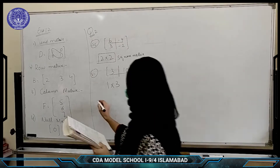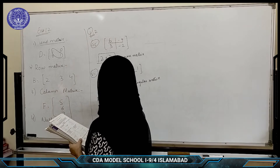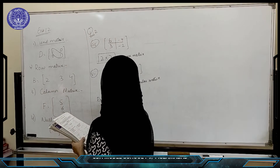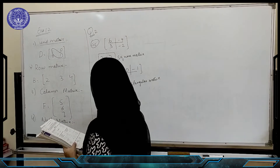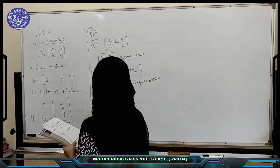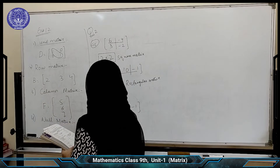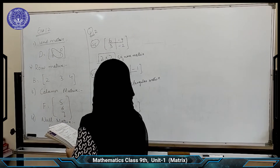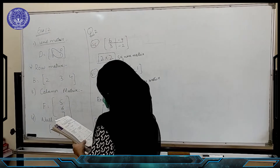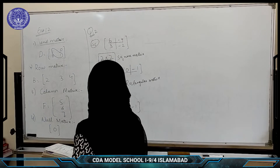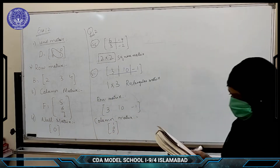Row matrix, which only comes with a rectangular matrix, like 3, 10 and minus 1. Now column, which also only comes with a rectangular matrix, like 1, 0, 0.